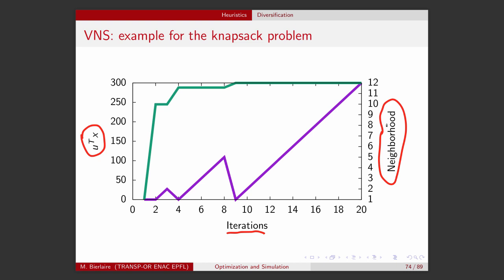We try all neighborhood structures with k equals 1 through k equals 12. At iteration 1 we use a neighborhood of size 1. At iteration 2 we find a better solution — the utility increases a lot — so we reset the neighborhood counter back to k equals 1. It fails to find a better neighbor, so we try k equals 2, and it succeeds. We reset again to k equals 1, then k equals 2, k equals 3 — no improvement — k equals 4 — no improvement — and with a neighborhood of size 5 we are able to improve the solution again.